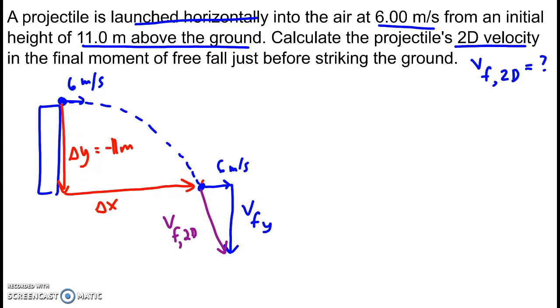We can find VFy. One of the equations that we have for horizontally launched projectiles is final y-velocity squared equals 2 times the acceleration due to gravity times delta y.